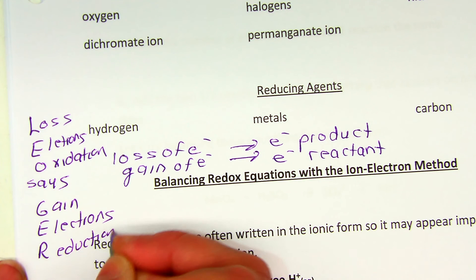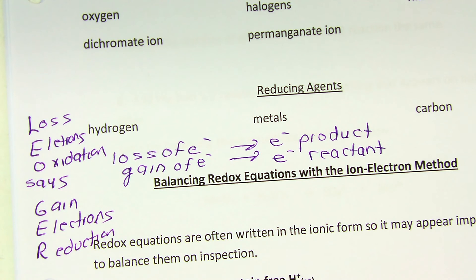Leo can be your friend. So we're going to look at this idea of which half of the reaction the electrons are on when we go through balancing redox equations with the ion-electron method. So we'll stop here and take our break, and then we will go through some examples.